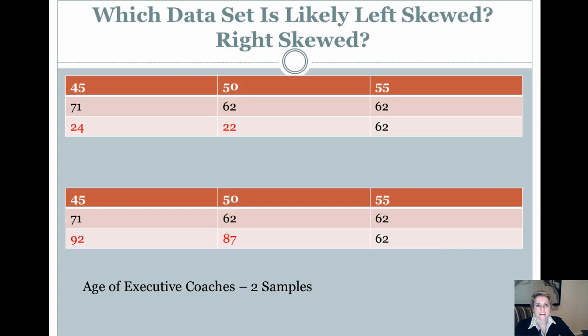Now, which data set is likely left skewed or right skewed? Remember that in particular, a way to remember whether it's left skewed or right skewed is whether the left tail is longer or shorter than the right. So when you look at this, take a peek, take a look at the data for a second. You'll notice that I highlighted red data, red data. All the other data that's not in red font is the same. So really, the only thing we're looking at is are there extreme values that might represent something different about this data? And the answer is yes.